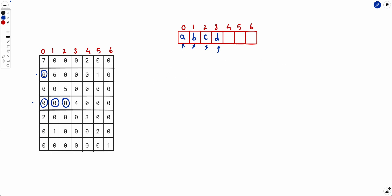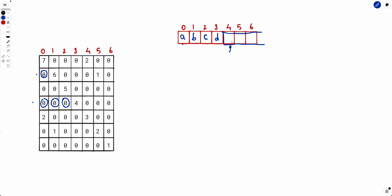Now let's find character at position 4. LCP(4,0) is 2, which is greater than 0. It means the substring starting at 4 and the substring starting at 0 share a common prefix of length 2 — meaning their first characters are equal. Since the string starting at 0 begins with 'a', the character at position 4 is also 'a'. Notice we can simply fill 'b' there as well, but we just need to fill the first character.